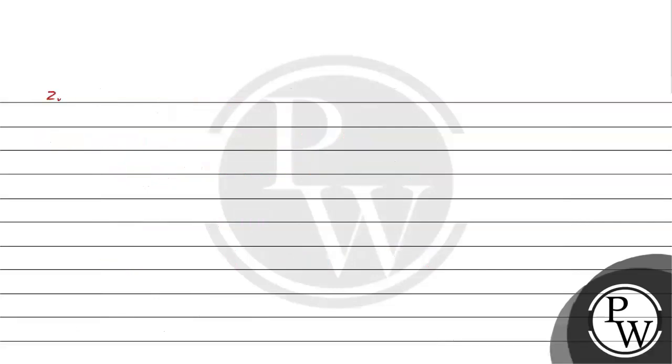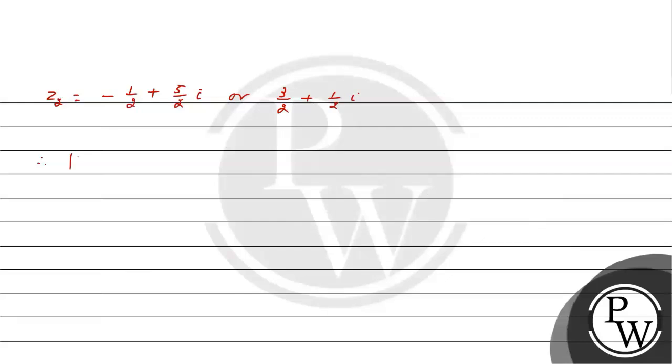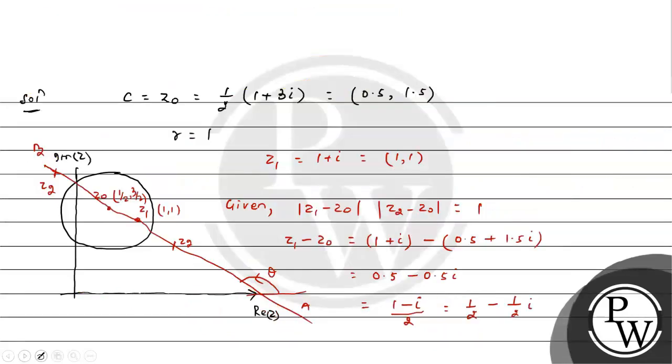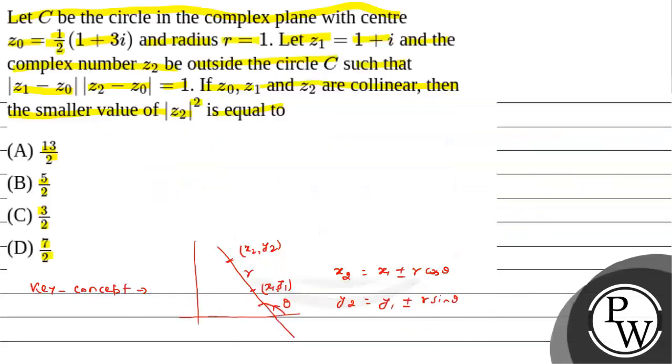Therefore, |z2|² = (1/4 + 25/4) or (9/4 + 1/4) = 26/4 = 13/2 or 10/4 = 5/2. This is the value of |z2|², but the smaller value is 5/2. This is the right answer to the given question, and the correct option is option B, 5/2. Hope you understood it well. Best of luck.